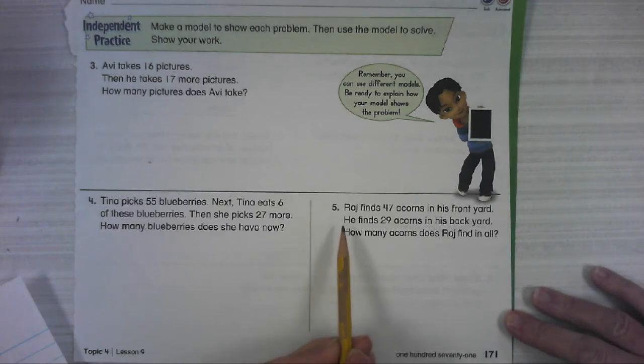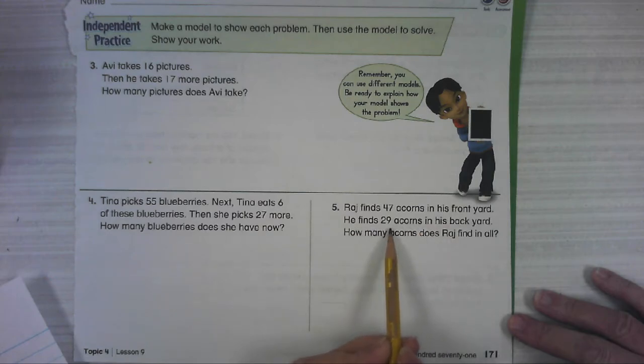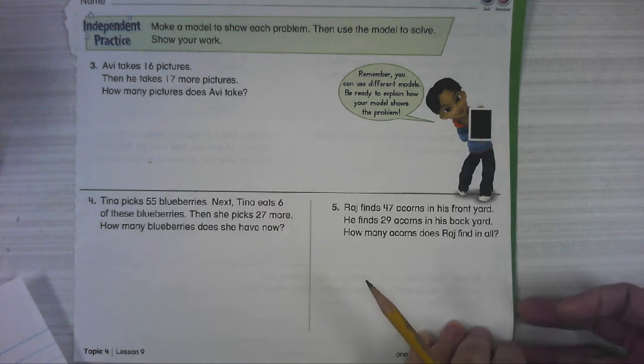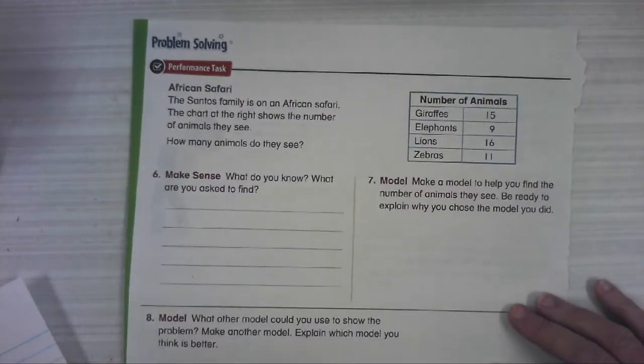Number 5, Raj finds 47 acorns in his front yard. He finds 29 acorns in his backyard. How many acorns does Raj find in all? Okay, just pause it while you work it and then come back.